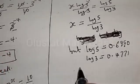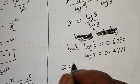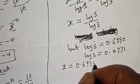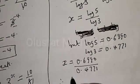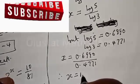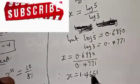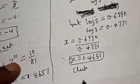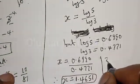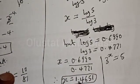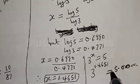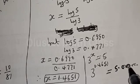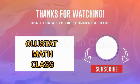Therefore x equals 0.6990 divided by 0.4771, so our final answer is x equal to 1.4651. To check: 3 raised to power 1.4651 equals 5.00, which satisfies the given equation. If you have enjoyed the class please don't forget to like, share, comment and subscribe. Thank you.